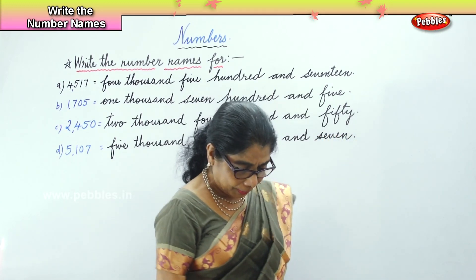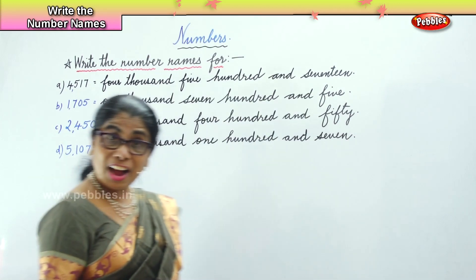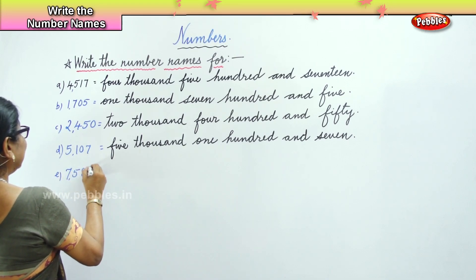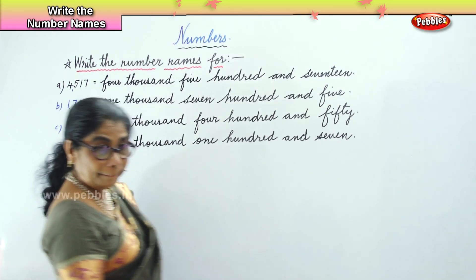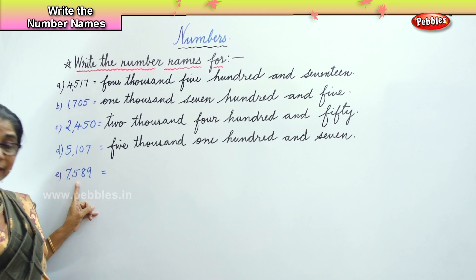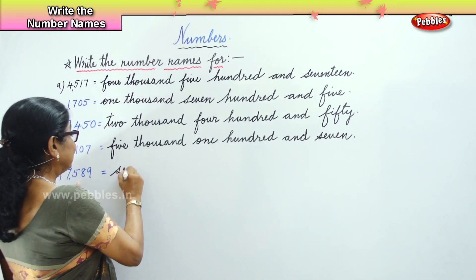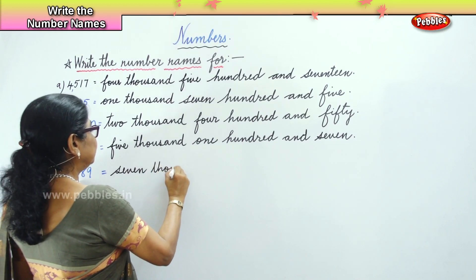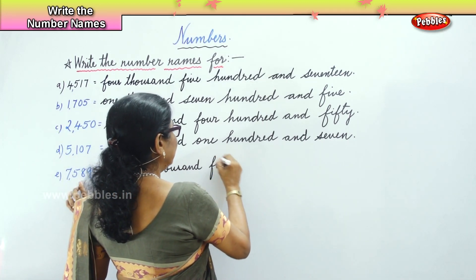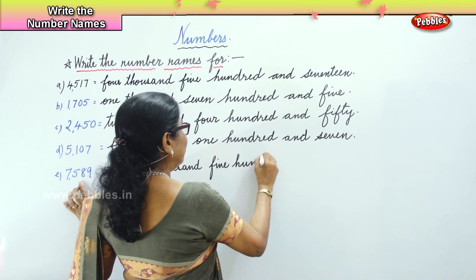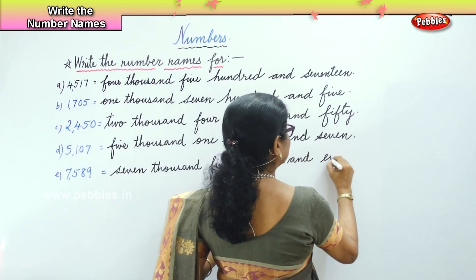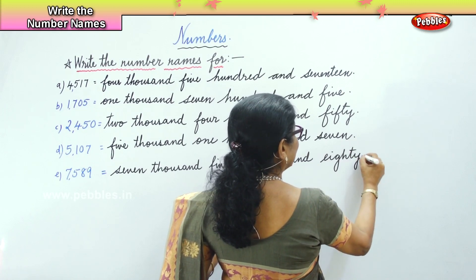The next number is 7589. Read that out to write its name. Seven thousand five hundred and eighty-nine. Good. Seven thousand, five hundred and eighty-nine.